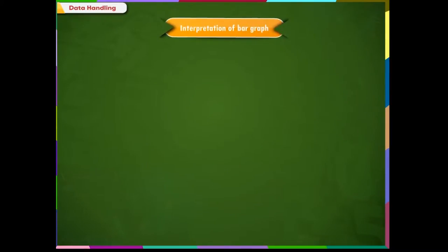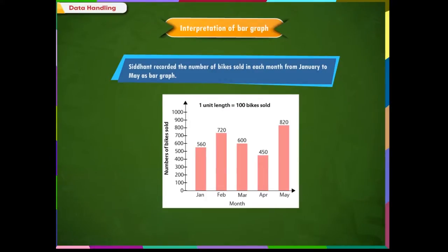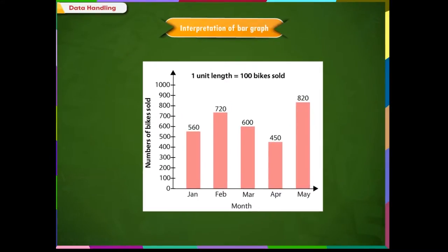Let us understand bar graph by interpreting the data they represent. Siddhant recorded the number of bikes sold in each month from January to May with this bar graph. This bar graph shows the sale of bikes from January to May. The width of the bars should be equal to the distance between the bars.